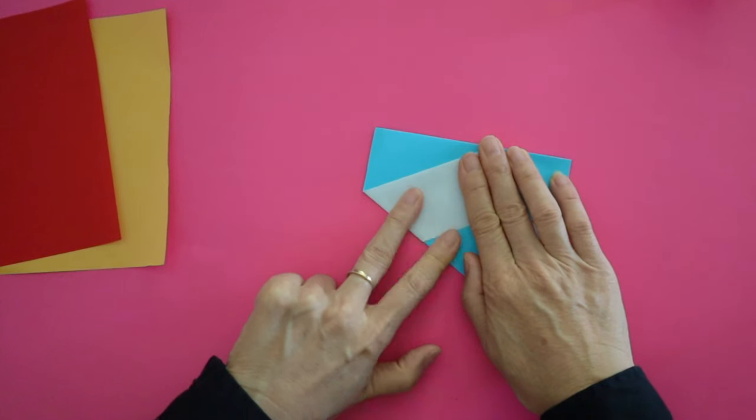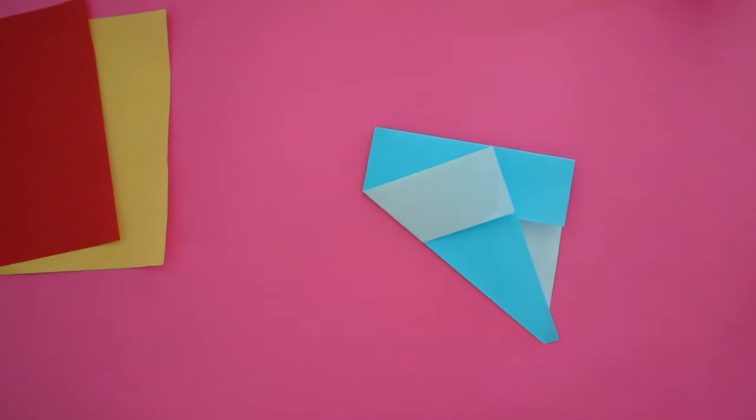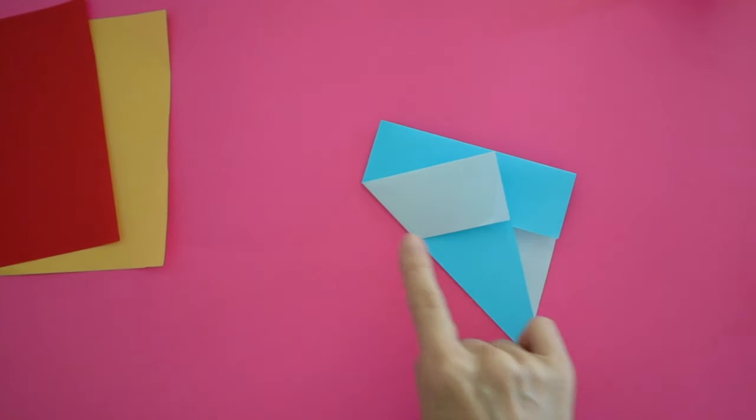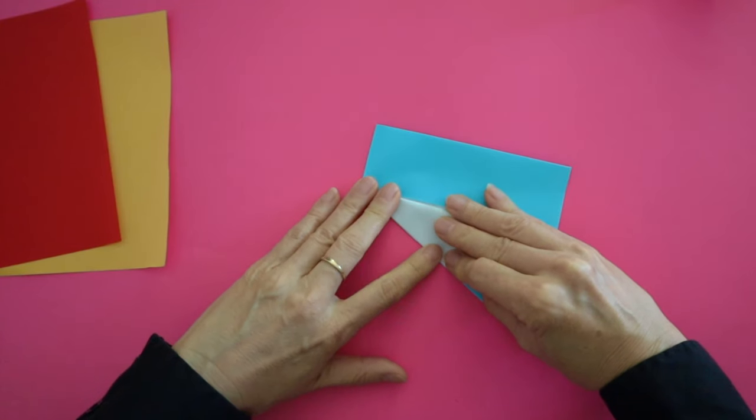Next, fold the flap you just made in half by bisecting the left side corner.